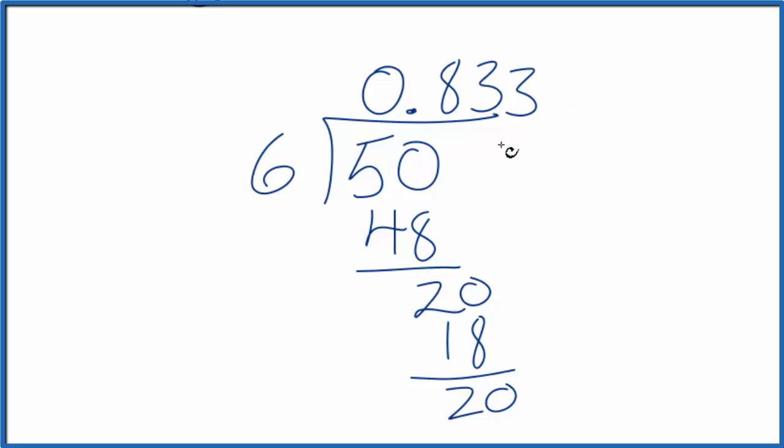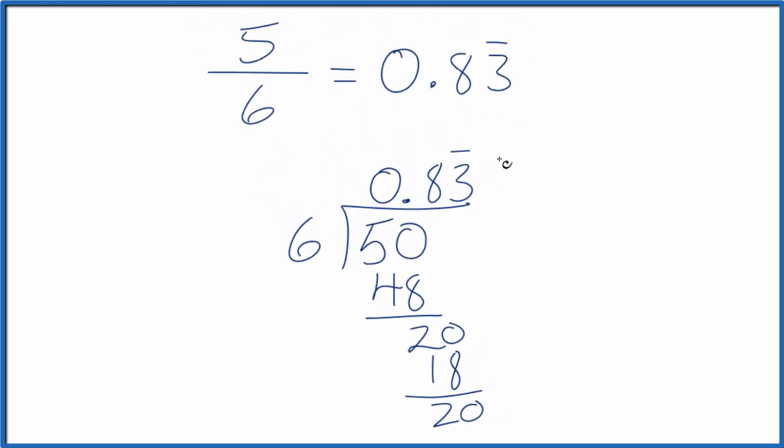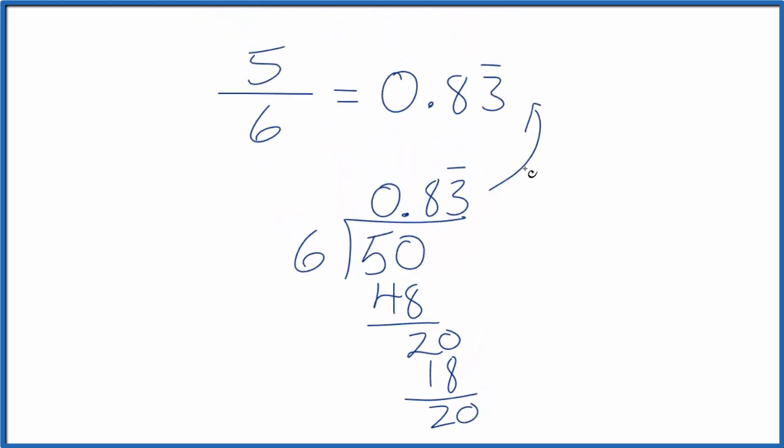It'll just keep going on. So again, let's just put a bar over here and call it 0.83̄ and the 3s repeat. And that's just like we found on our calculator. If you take 0.8333 repeating and you multiply that times 6, you'll end up getting 5. So that's a good way to check your work. Multiply the answer by the denominator and you should get 5.